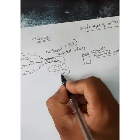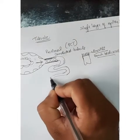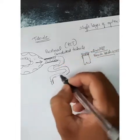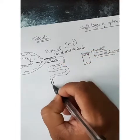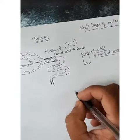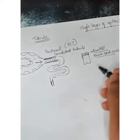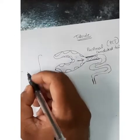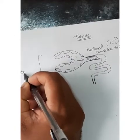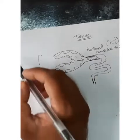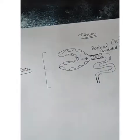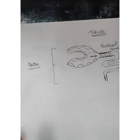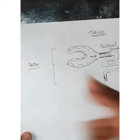The convoluted part is followed by a small straight part. Remember: all convoluted structures are present in the cortex. The kidney is made up of an outer cortex and an inner medulla; all glomeruli and all convoluted structures are present in the cortex.